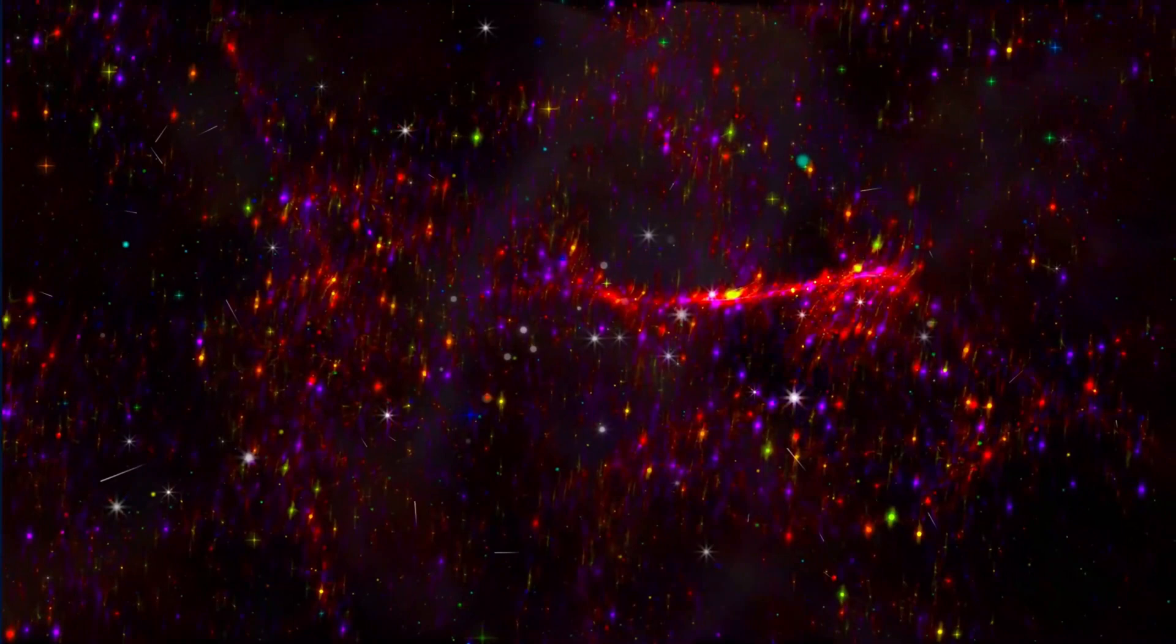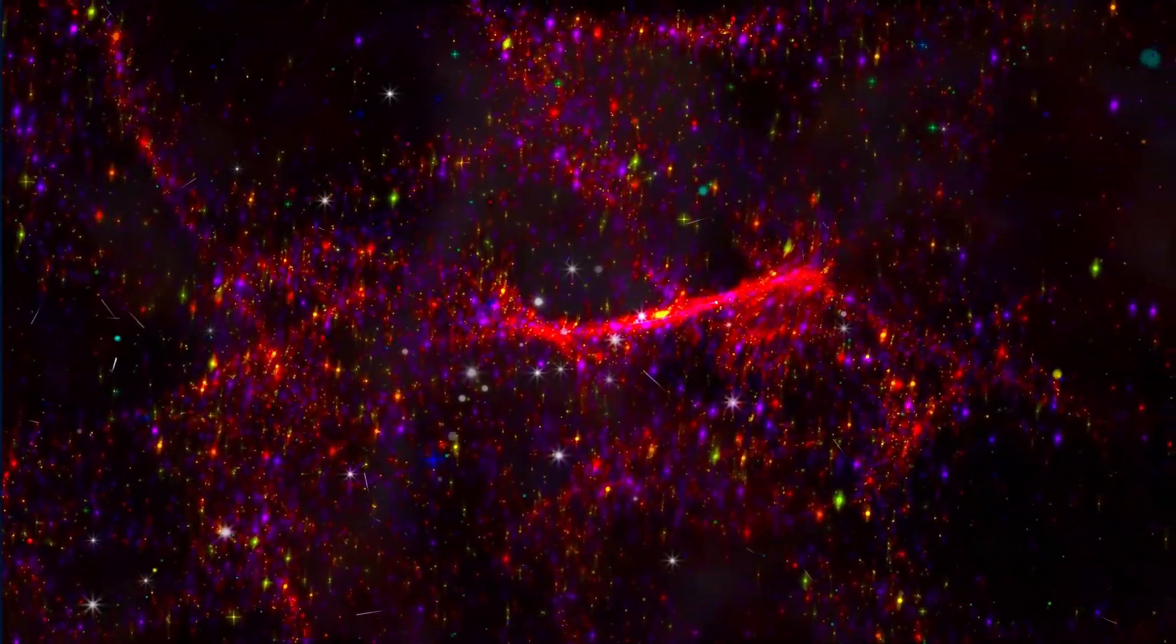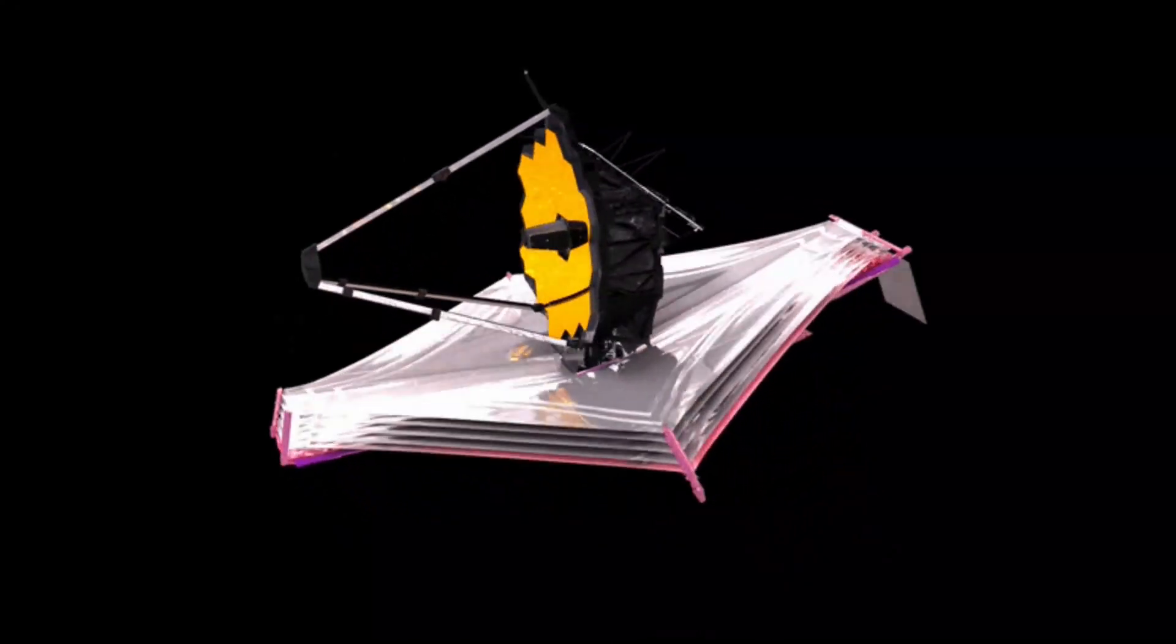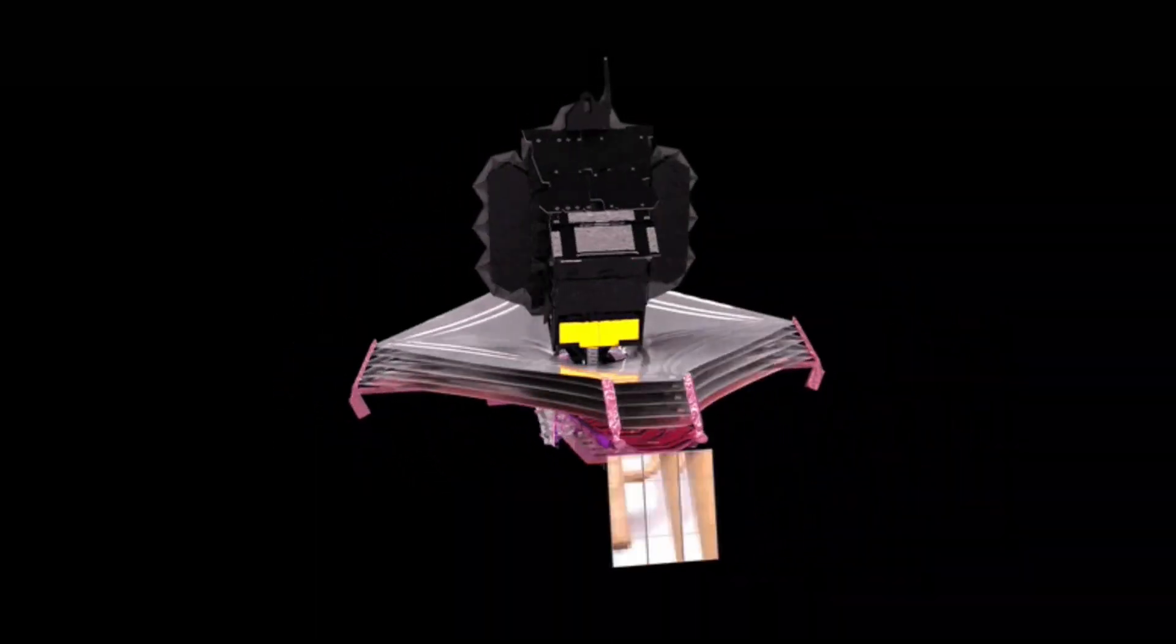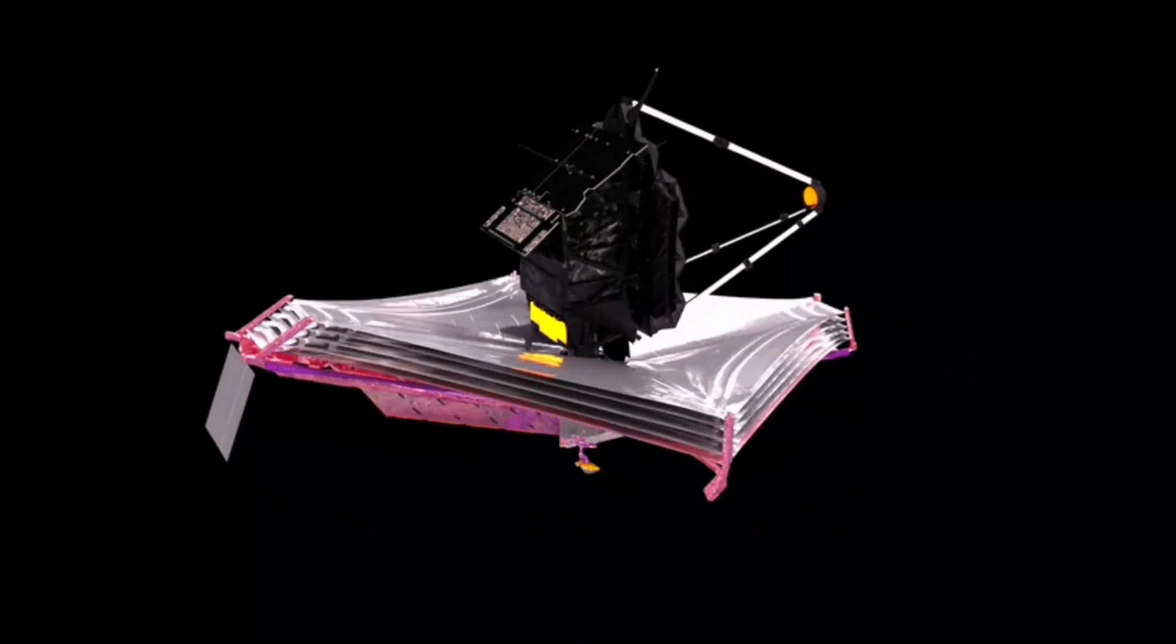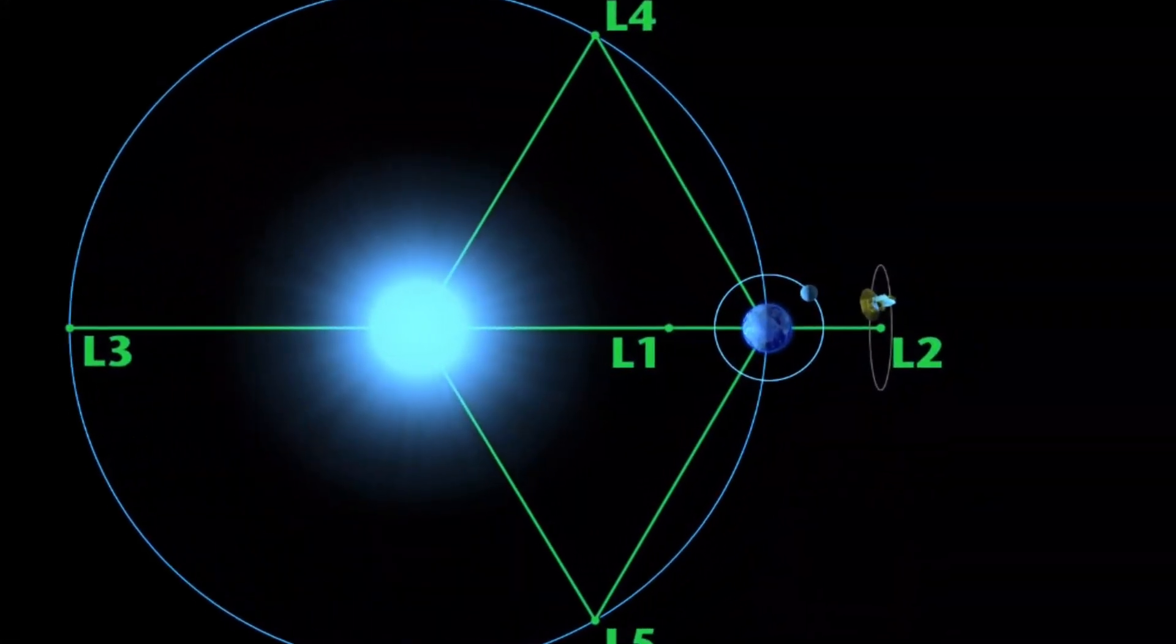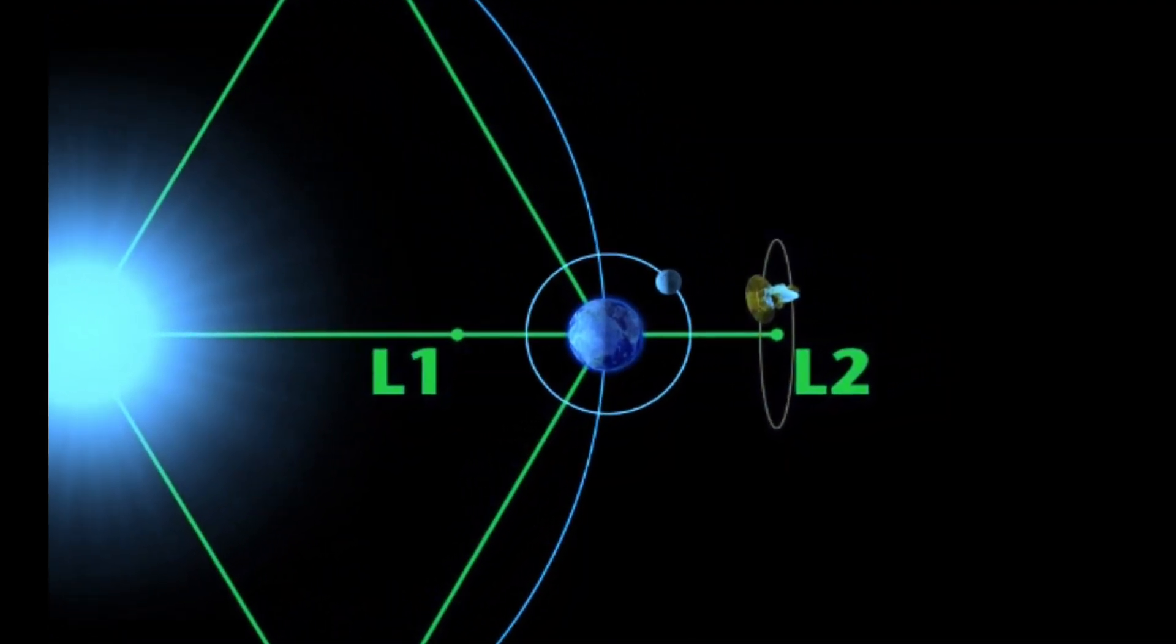At the same time, the telescope is also positioned to provide a continuous view of Sagittarius A* during both its flaring and tranquil periods. Webb will be perched around 1 million kilometers from Earth at Lagrangian Point 2, L2, a gravitationally stable location. The L2 orbit ensures that it will always be facing away from the sun, sheltering it from the star's light and heat.